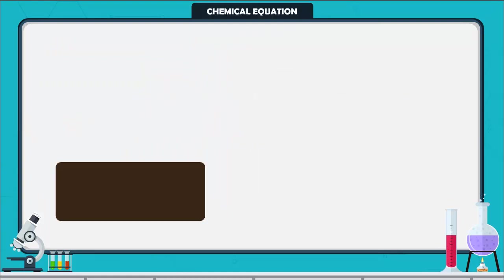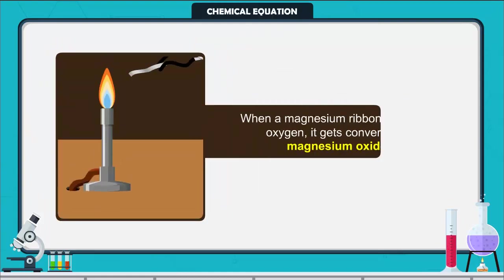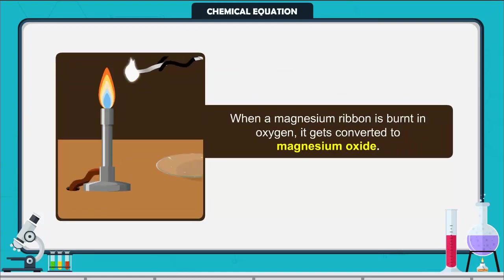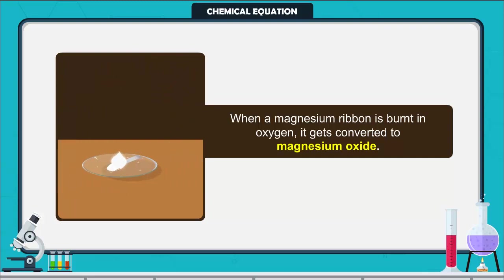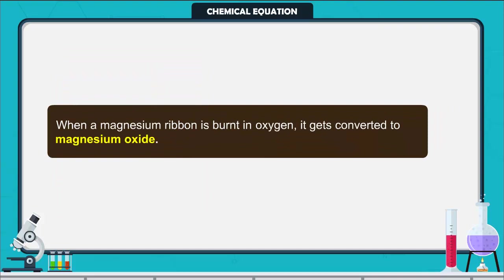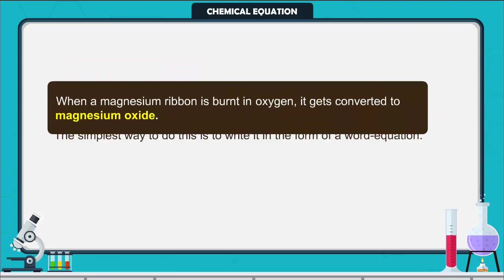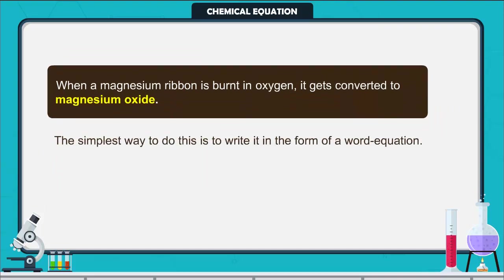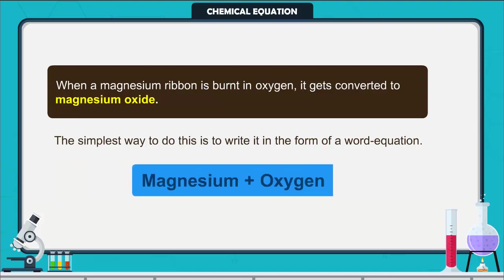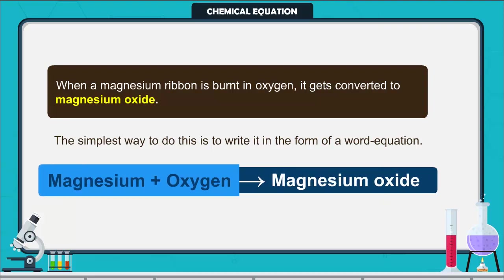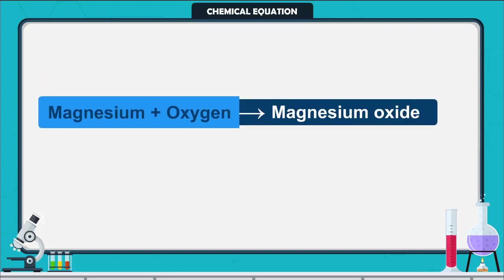Chemical equation. When a magnesium ribbon is burnt in oxygen, it gets converted to magnesium oxide. This description of a chemical reaction in sentence form is quite long. The simplest way to do this is to write it in the form of a word equation: Magnesium plus oxygen produces magnesium oxide. The left-hand side of a chemical equation represents the reactants, and the right-hand side represents the products.